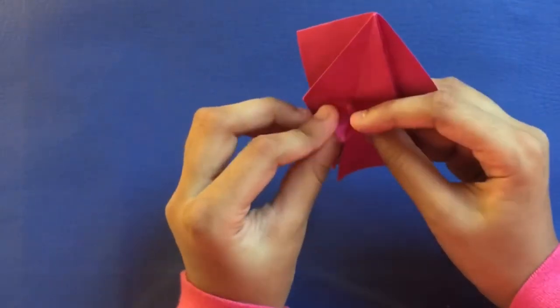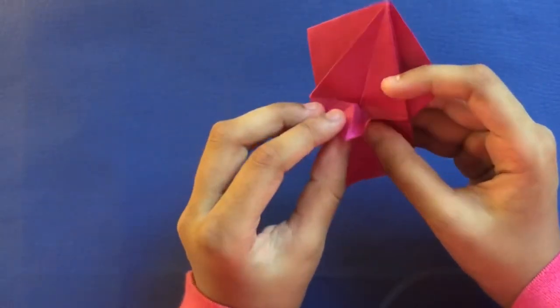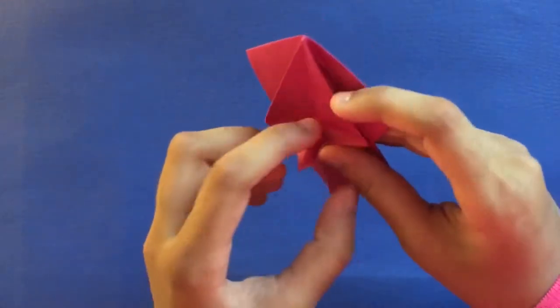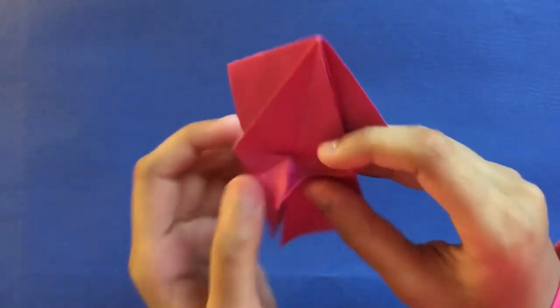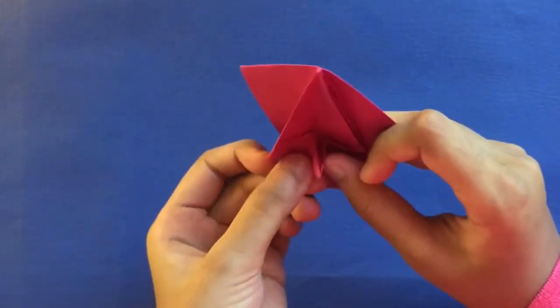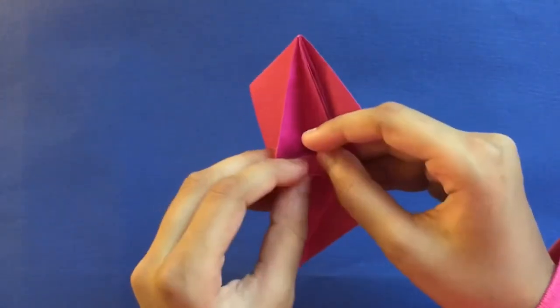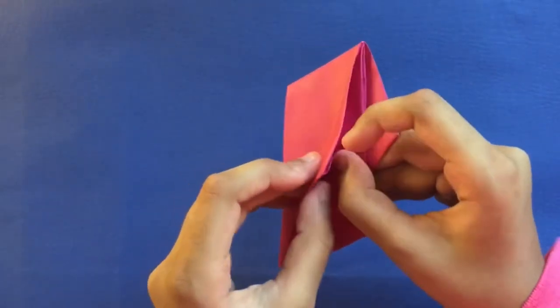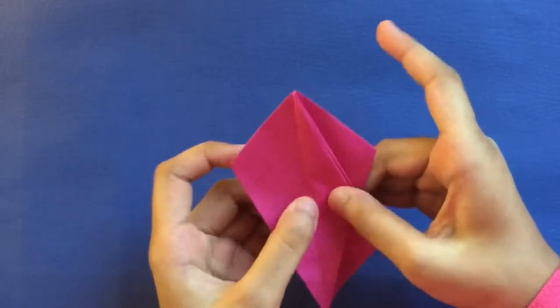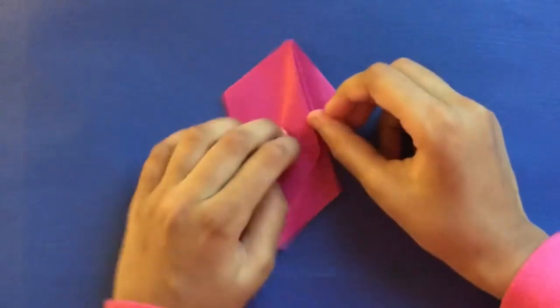Make a triangle fold like this, so align with this edge and this crease. There's something like that. I'll show you the other one. Repeat and you can just align it like that.